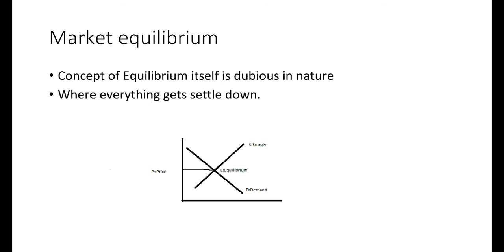By writing this demand function, we create a mathematical representation which we can use for further inquiry. Similarly, we have a supply function, and we can use both functions to draw straight lines — demand having a negative slope and supply having a positive slope — getting interacted and arriving at the equilibrium price P-star. Economics students will know that P-star is the equilibrium price and Q-star is the equilibrium quantity.